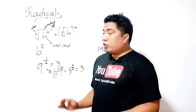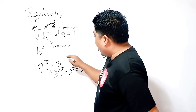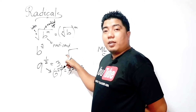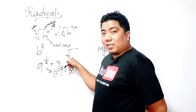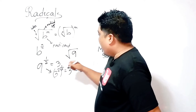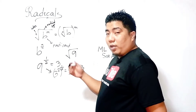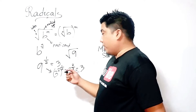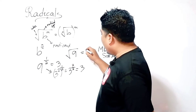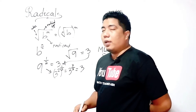With the use of radicals, the 2 here can be our index, our 9 will be our radicand, and our exponent will be 1 — which is understood to be 1, so we don't need to write it. So, what is the square root of 9? That is 3, which is just the same result.